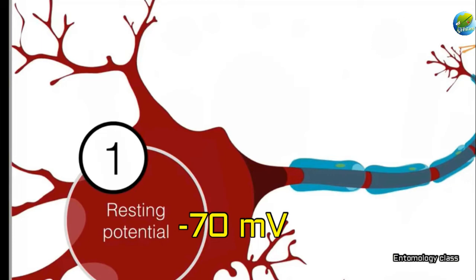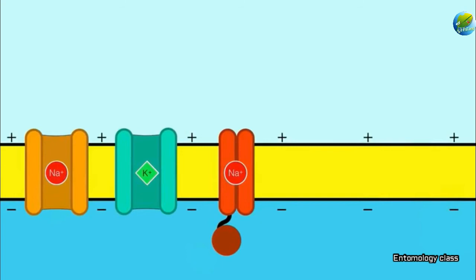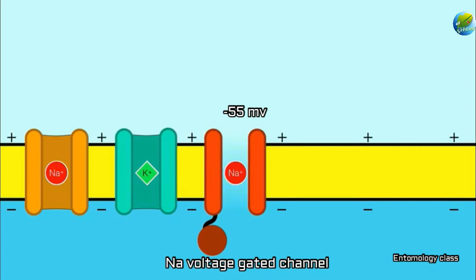This resting potential will lead to action potential. Here we can see the potassium and sodium leak channels, and another important channel — the sodium voltage-gated channel. It has a polypeptide ball on the bottom. When the voltage reaches minus 55 millivolts, it opens wide and allows a huge amount of sodium inside. When the voltage moves away from minus 55 millivolts, it closes.